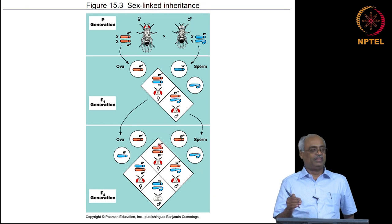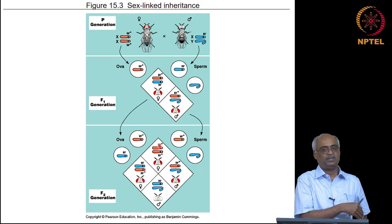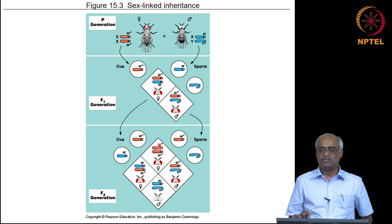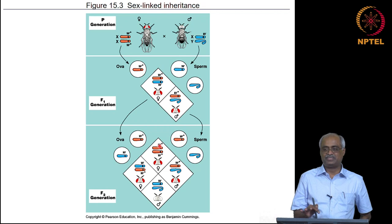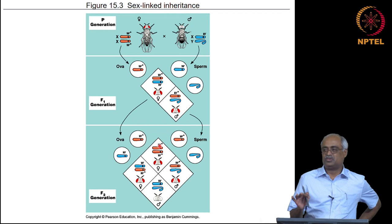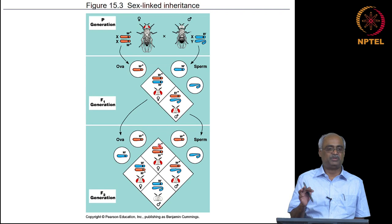This sex-linked inheritance pattern immediately showed that the eye color gene is not just on a chromosome — it is specifically on the X chromosome. This conclusively proved what cytologists had been observing and comparing with Mendelian inheritance of genes: genes are indeed on chromosomes. This is something worth knowing — understanding how we discovered that genes are on chromosomes.